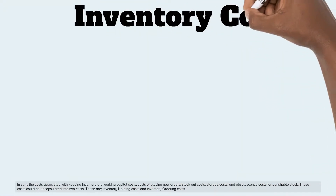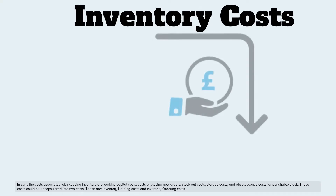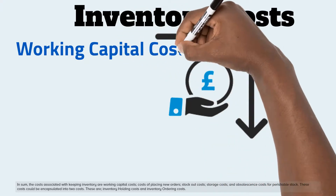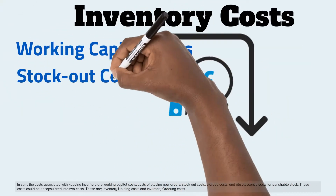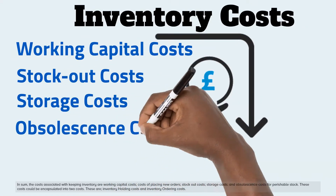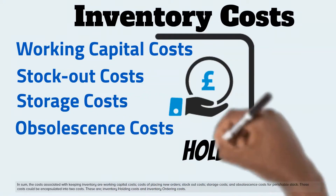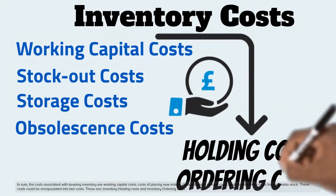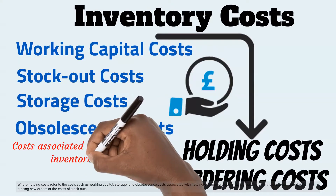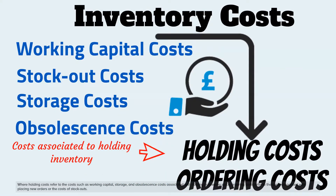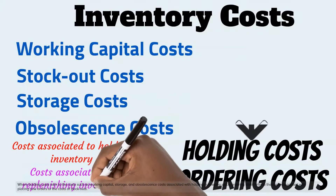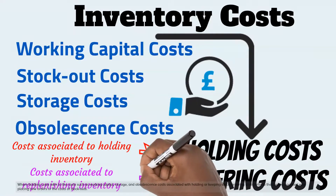The costs associated with keeping inventory are working capital costs, costs of placing new orders, stockout costs, storage costs, and obsolescence costs for perishable stock. These costs can be encapsulated into two categories: inventory holding costs and inventory ordering costs. Holding costs refer to working capital, storage, and obsolescence costs associated with holding stock. Ordering costs refer to the costs associated with placing new orders or the costs of stockouts.